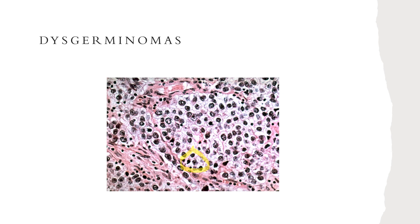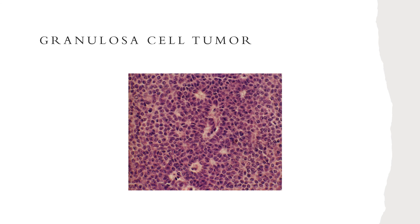In terms of histology buzzwords: dysgerminomas present with the fried egg appearance — an area of clear glycogen-filled cytoplasm with a centrally placed nucleus. Yolk sac tumors will have Schiller-Duval bodies, which are invaginated papillary structures with a central vessel. Granulosa cell tumors are the ones that will have Call-Exner bodies, which are tumor cells arranged in sheets punctuated with small follicle-like structures.